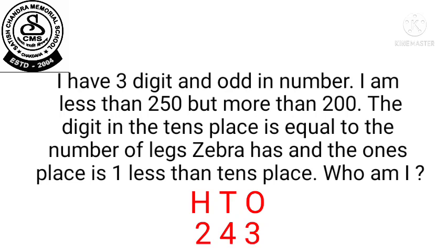Yes, now you can check with the conditions. Let us check. First, it is a 3-digit number. Second, it is an odd number. After that, 243 is less than 250 and more than 200. The 10th place digit is 4 and the 1's place digit is 1 less than 4. So our answer is right.